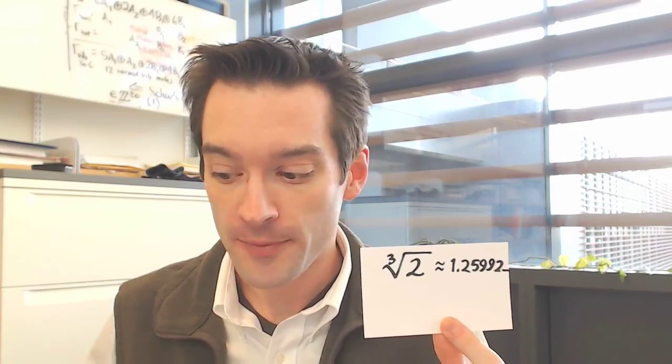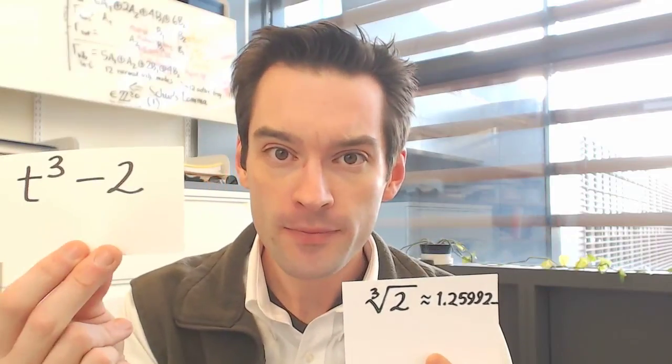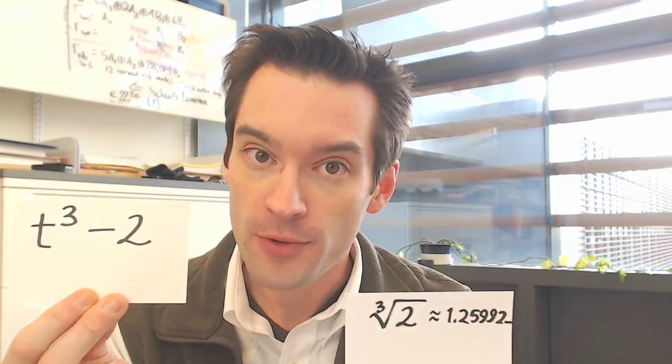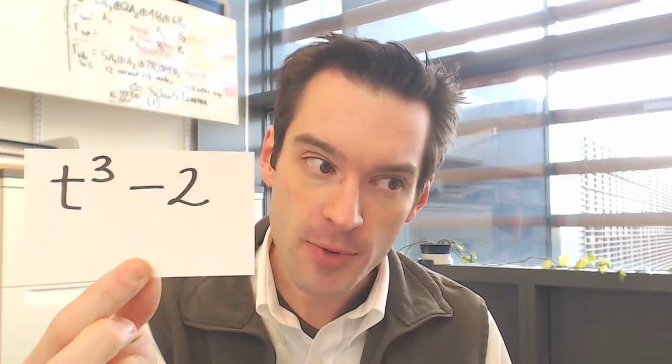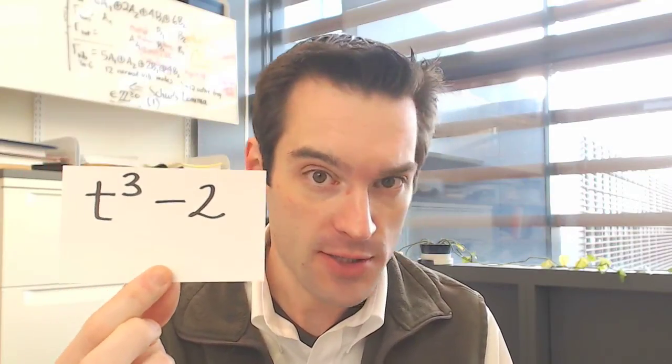A minimal polynomial for an algebraic number over a field is a polynomial of which that number is a root, and which is irreducible and monic, so the leading coefficient is equal to 1.